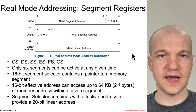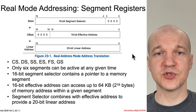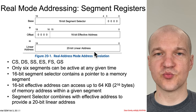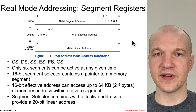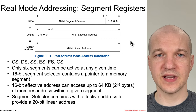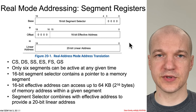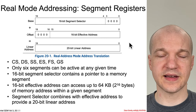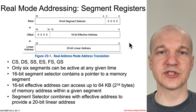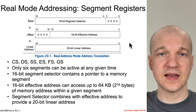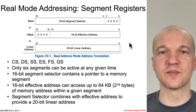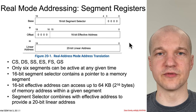Even though you can access up to one megabyte with a 20-bit address, in practice because you've got the 16-bit offset within the given segment, you're only really accessing 64 kilobytes at a time. The segment selector has to be shifted around in order to access different 64 kilobyte windows within a given one megabyte region.